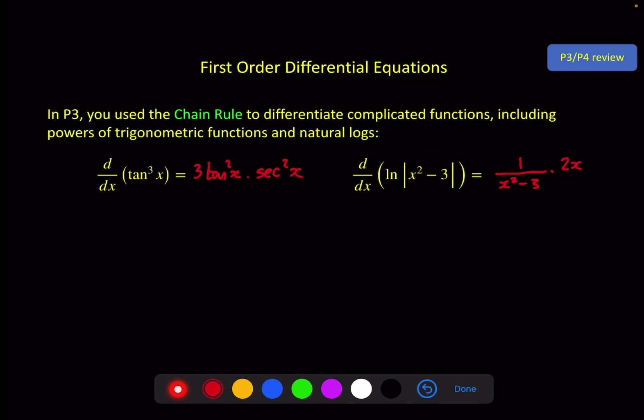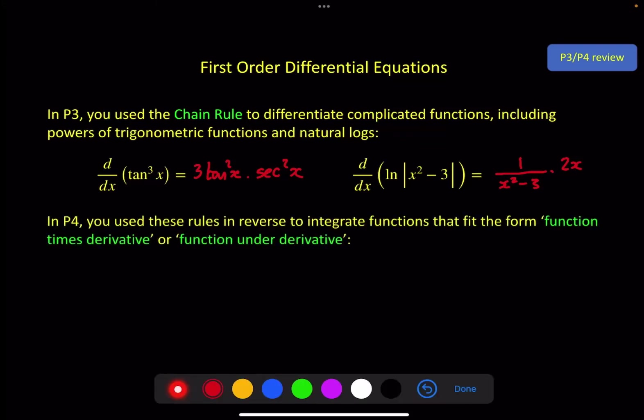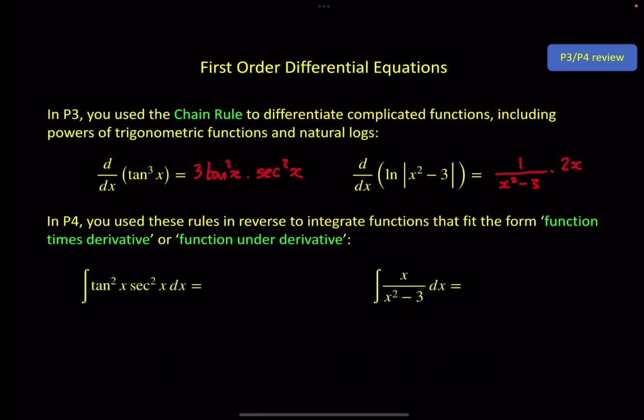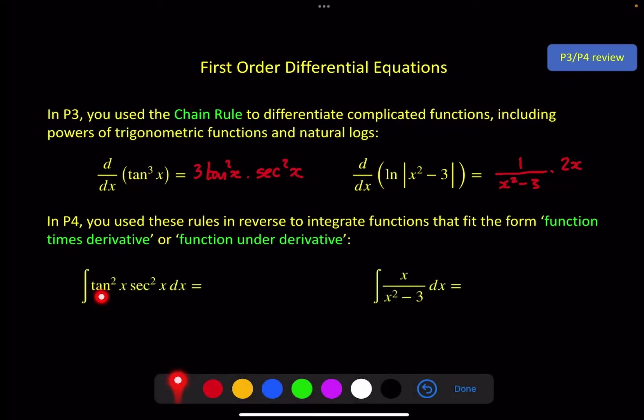More than this, you need to be able to use these to go backwards, as you did in P4, to reverse these. So, knowing these two results, we can see quite easily that this comes from something like this, but there's a 3 here and there is no 3 here, so I need to take 1 third of this.